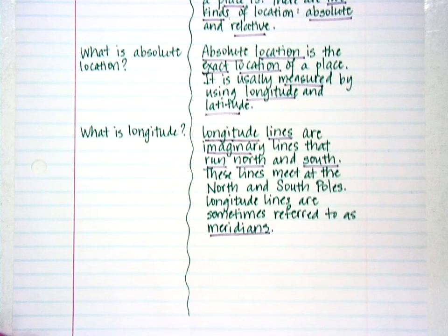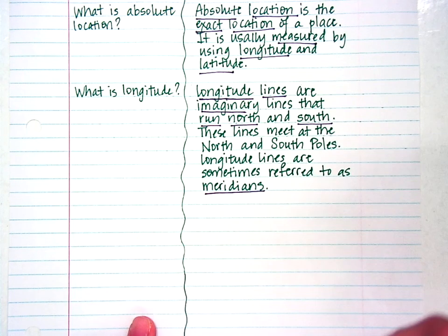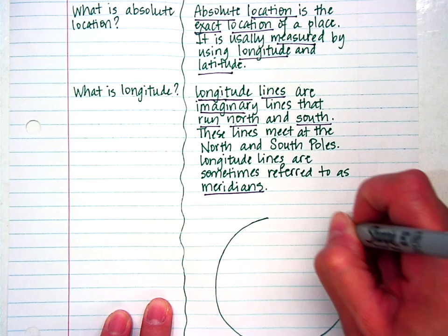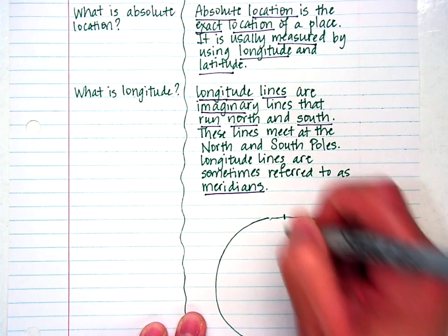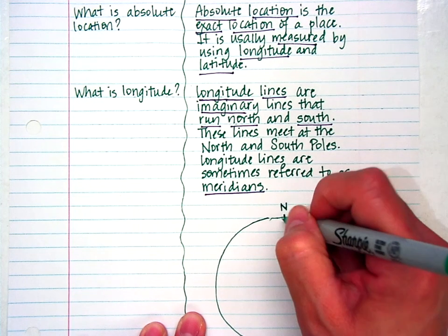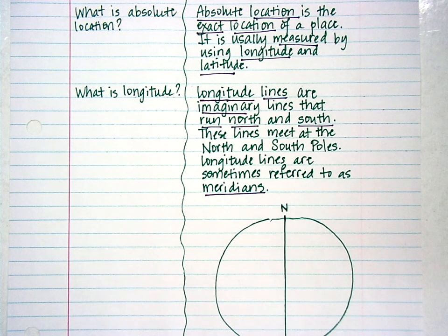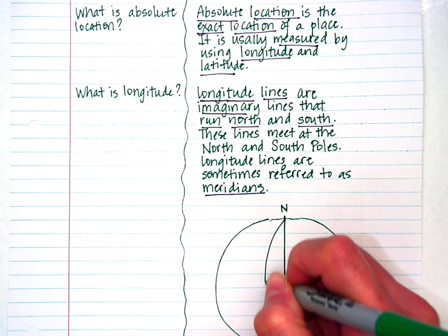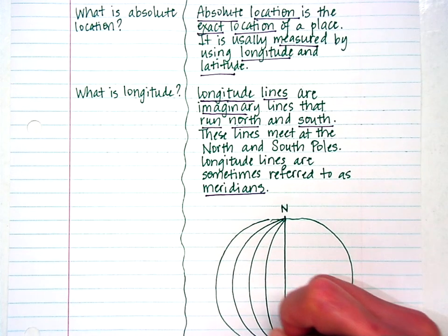I want to draw what longitude lines look like. On the right-hand side of your paper, to the best of your ability, draw a circle. Longitude lines run from the north pole to the south pole. The north pole is where Santa lives and there is no land there — it's only ice. The south pole is where the penguins live and that does have land. So longitude lines go from the north pole to the south pole — Santa to penguins.